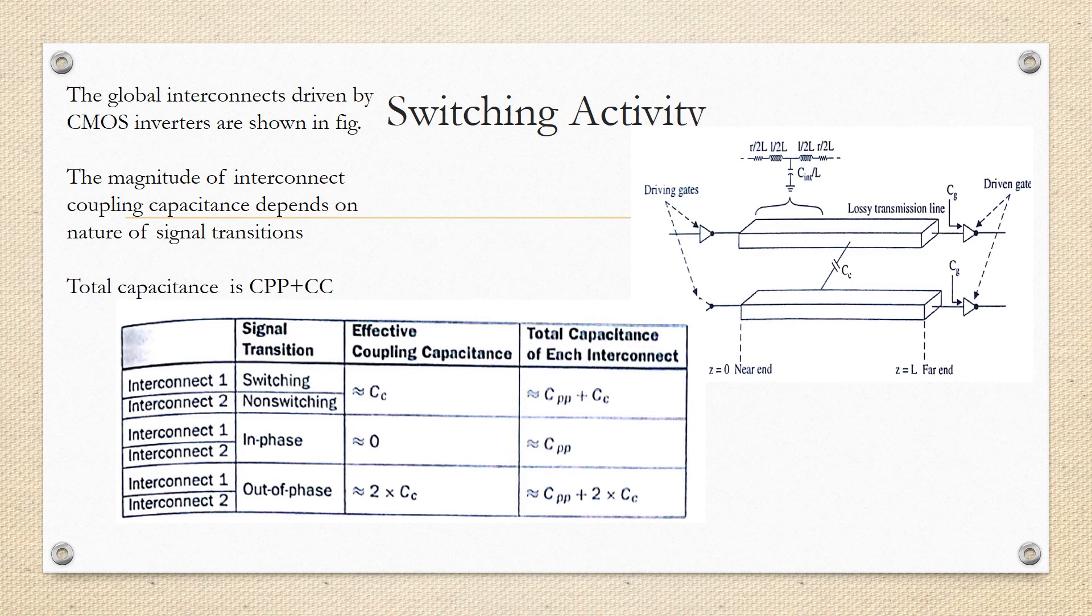Further, we will see dependence of coupling capacitance on switching activity. Two capacitively coupled global interconnects are shown in the figure. The global interconnects represent lossy transmission lines and are modeled as distributed RLC impedance. The magnitude of interconnect coupling capacitance is dependent upon the nature of signal transitions.